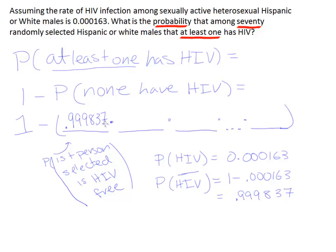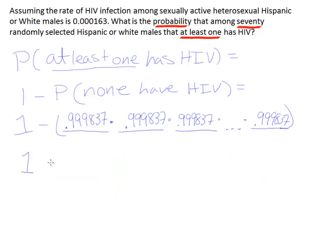We're going to assume that these individuals are independent of one another. So the chance the second person doesn't have it is the same, and the third person, and so on — we're going to have 70 of these. Essentially, what we have to do to solve the problem is just compute 1 minus 0.999837 raised to the 70th power.